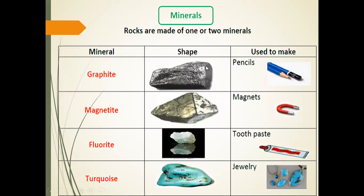Here is a revision of the minerals. Graphite — this is its shape, similar to pencil color. We use graphite to make pencils, the part we write with. Magnetite — this is its shape, used to make magnets. Fluorite — this is its shape, used to make toothpaste. Turquoise — this is its shape, bluish or bluish-green color, used to make jewelry. We have now finished the explanation part.